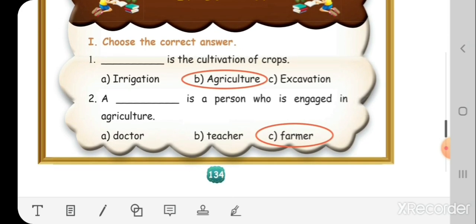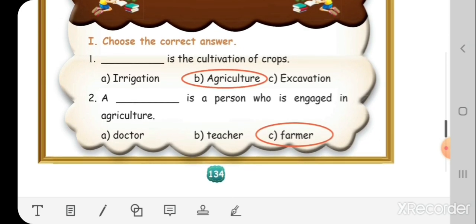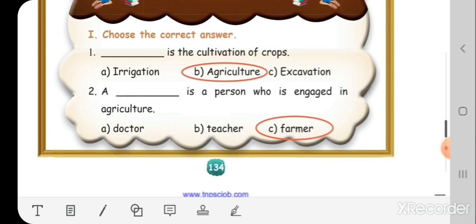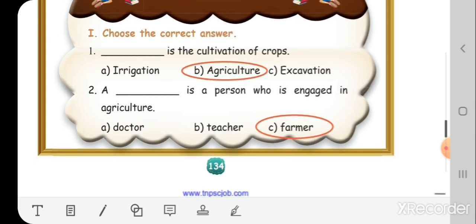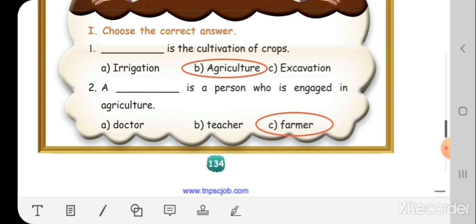Second one. A dash is a person who is engaged in agriculture. Farmer is a person who is engaged in agriculture.